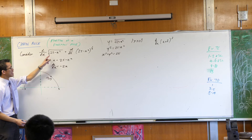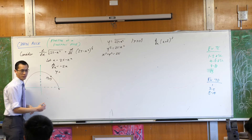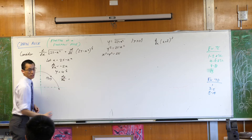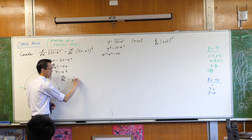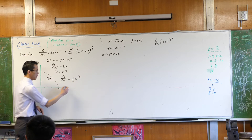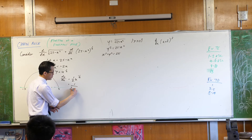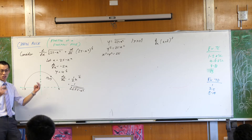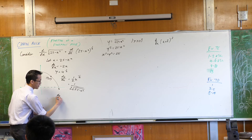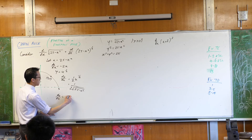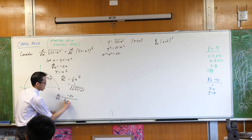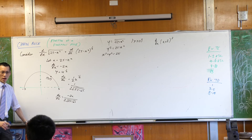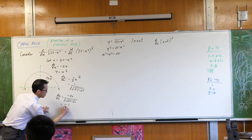Now I need dy/du, so I write y as a function of u: it's u to the power of a half. The derivative with respect to u is — bring the power out the front and reduce the power by 1 — which gives 1 over 2 root u. Now I can apply the chain rule: dy/dx equals du/dx times dy/du. Combining them and simplifying, I get negative x over the square root of 25 minus x squared.